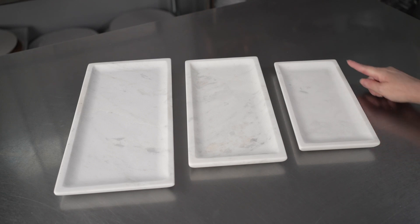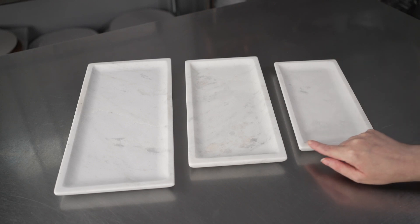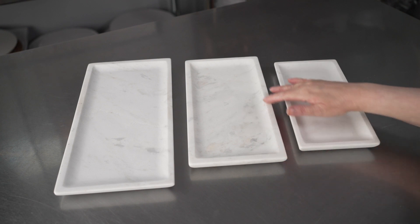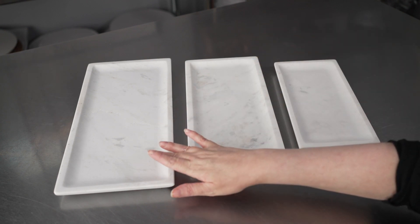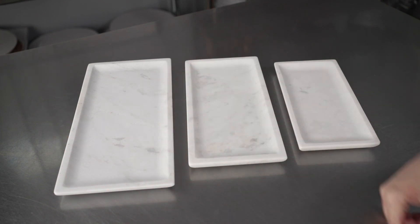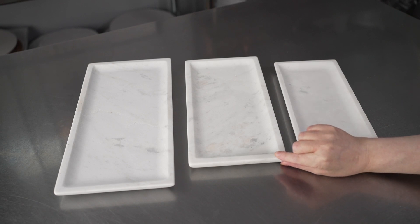The small is nine and three quarters inches long by four and three quarters inches wide. The medium is five and three quarters inches wide by eleven and three quarters inches long, and the large is six and a half inches wide by thirteen and three quarters inches long. They all feature a three quarter inch depth.